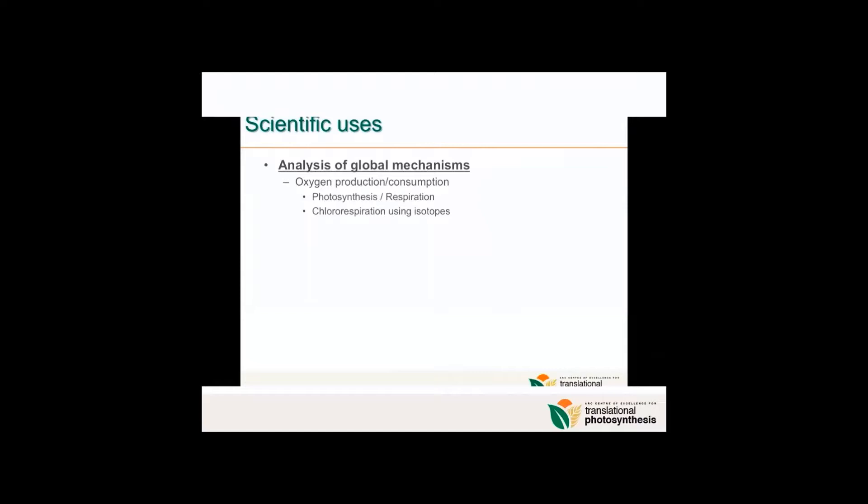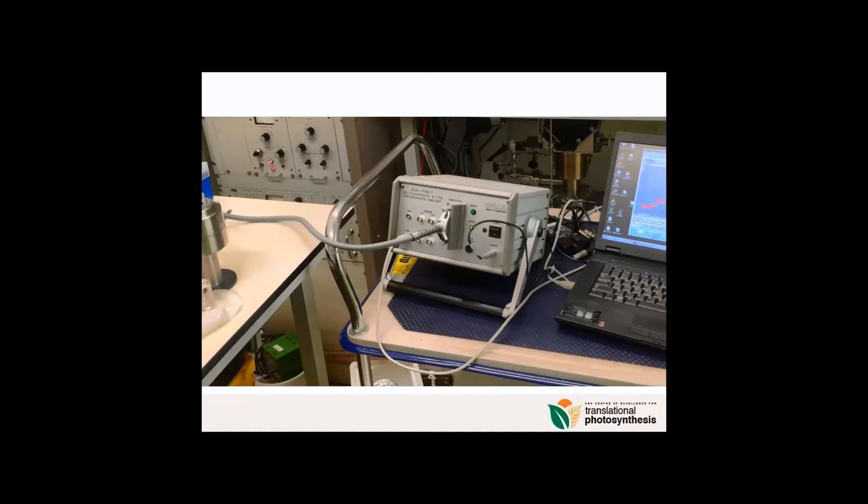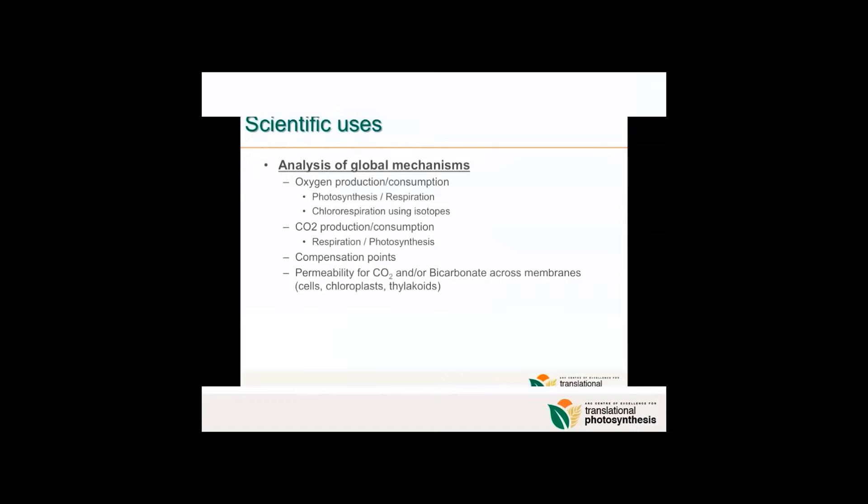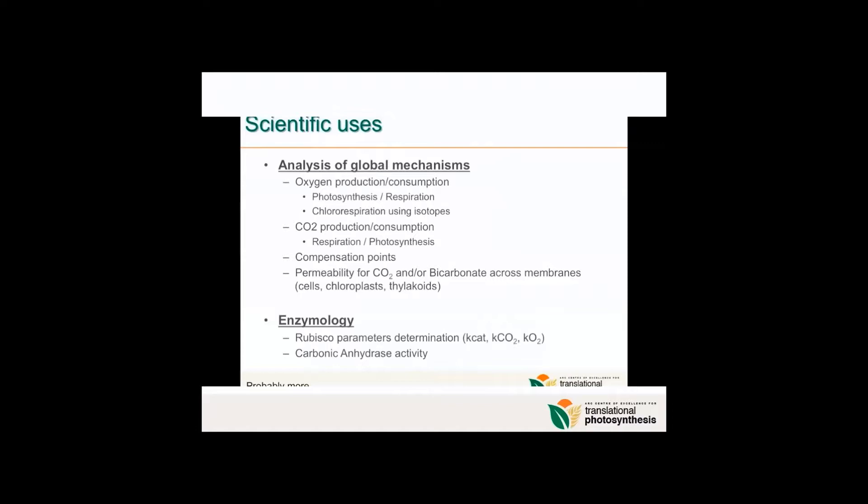What can we do with our mass spec? First, we can use it for oxygen production or consumption, basically photosynthesis and respiration. We can use it for chlororespiration. If you use isotopes, we can use it for CO2 production and consumption. We can couple the mass spec with chlorophyll fluorescence with the PAM and cross the information about photosynthesis. We can also use the mass spec for compensation points or permeability for CO2 and bicarbonate across membranes like cells or chloroplasts.